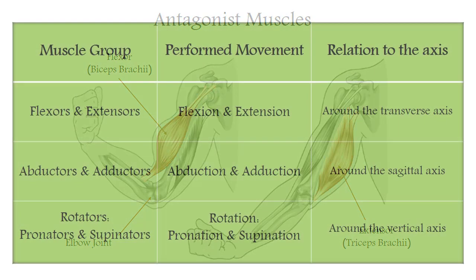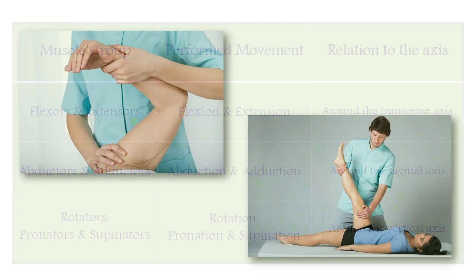Muscle groups that cause movement in opposite directions are called antagonists, and there are three groups: flexors and extensors, abductors and adductors, and pronators and supinators. This information is especially important for massage therapists working with patients — for example when working with joints, with children with increased or decreased muscle tone, or in neurological practice.